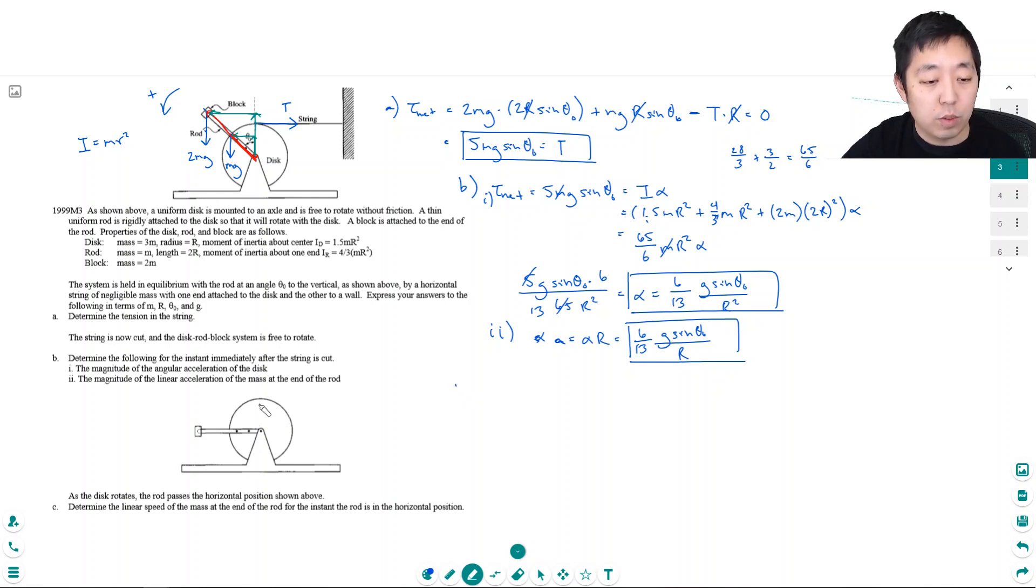So as the disc rotates, the rod passes the horizontal position. Determine the linear speed of the mass at the end of the rod for the instant the rod is in the horizontal position. This is a little bit of a tricky one. The thing is, this acceleration changes because the torque actually changes as this thing rotates. Because this angle changes. And so the vector that's perpendicular to the force vector is gonna change as it rotates. And so it's not a constant acceleration. There's no kinematic way to calculate from the acceleration, not without calculus. So what we're gonna do instead is we're gonna do conservation of energy.